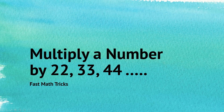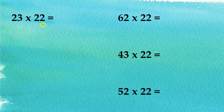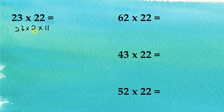Let's look at how to multiply a number by 22, 33, 44, and so on. We'll start with multiplying double-digit numbers by 22. Now, 22 is equal to 2 times 11, so if we multiply a number by 22, we can multiply it by 2 first, then followed by 11. For example, 23 multiplied by 2 equals 46.